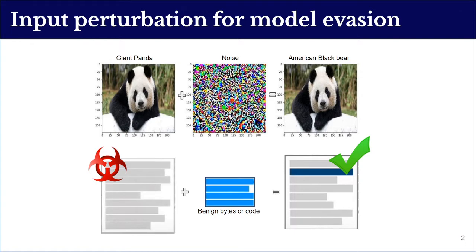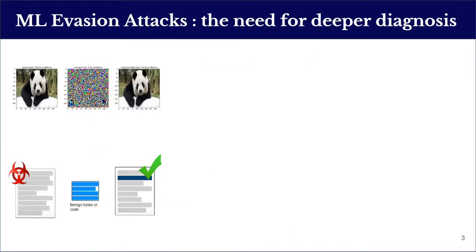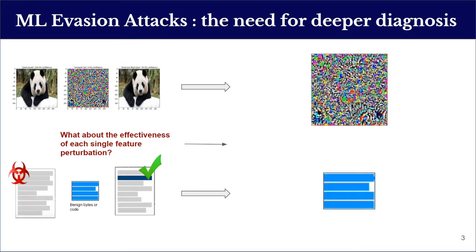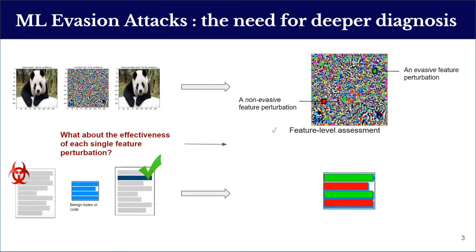Based on related works, the effectiveness of feature perturbation-based machine learning evasion attacks is typically assessed by aggregate evasion accuracy. Such high-level assessment lacks deeper insights about performance at the level of each feature manipulation. More precisely, the added noise to each feature can either produce an evasive perturbation leading to misclassification — represented in green — or it can be a non-evasive perturbation that works against the adversary's goal.